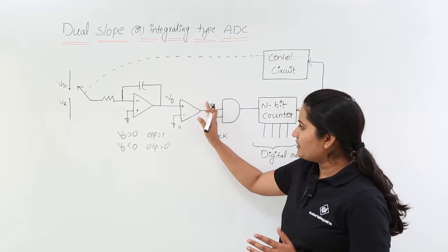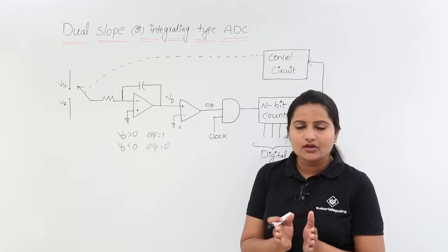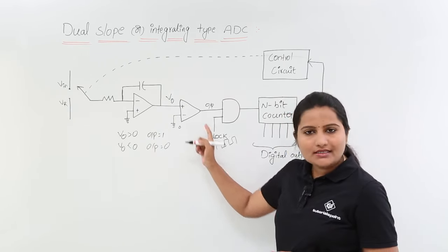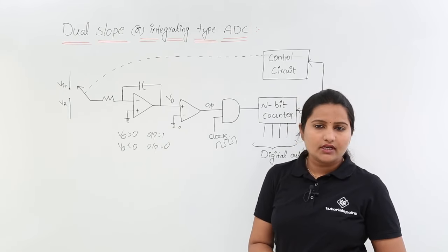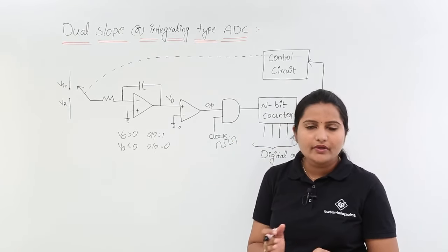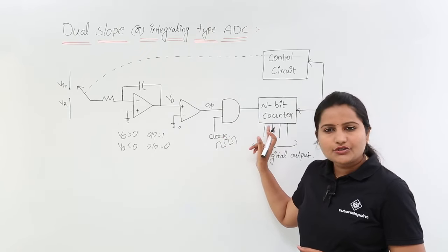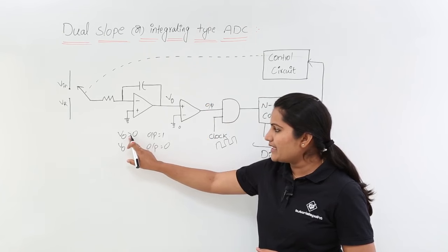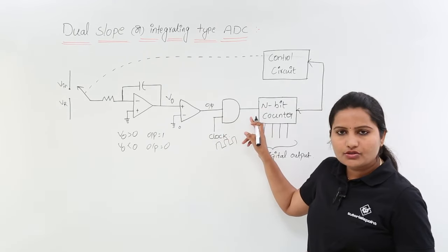The AND gate is given with this comparator output and the clock signal. You know the property of an AND gate — whenever both inputs are high, then only output is equivalent to high. If you want to pass this clock signal as it is, you need the comparator output to always be equivalent to 1. If that output is equivalent to 0, then definitely the clock is not going to pass to the output of the AND gate, because 0 AND any signal is equivalent to 0.